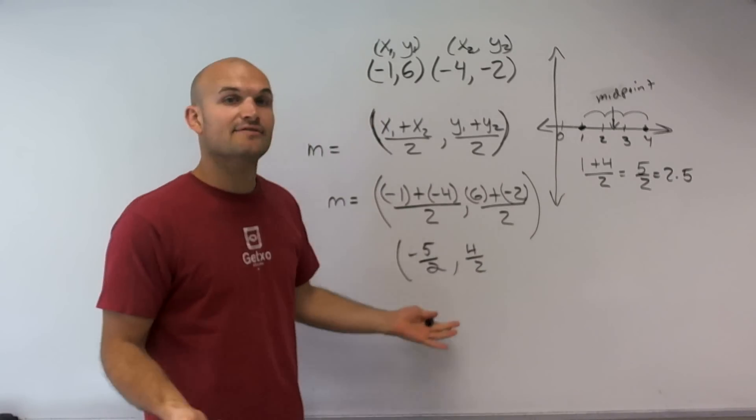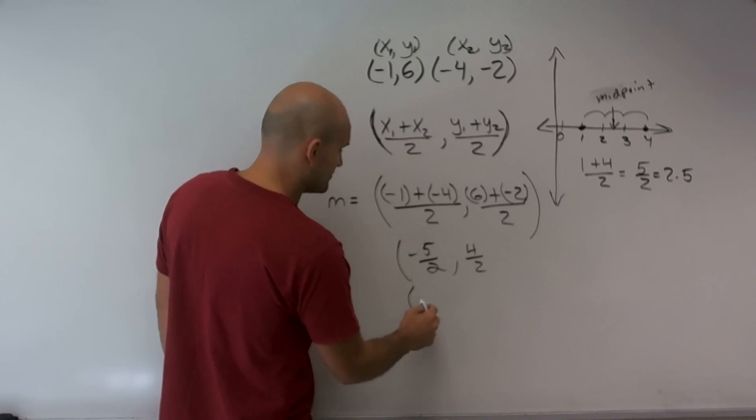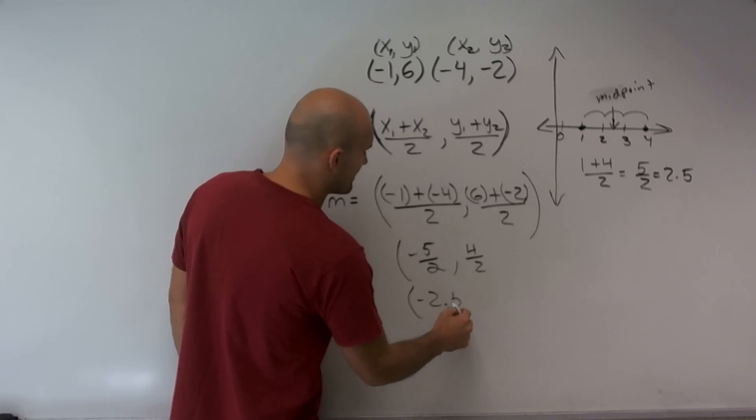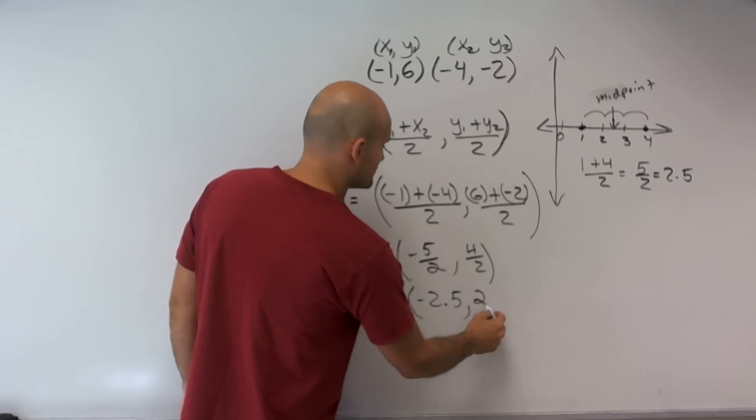And we can just leave it in your fraction. Obviously, this can be reduced. But what we'll do is we can write it as decimals, or we can leave this as a fraction. But as a decimal, this is negative 2.5. And, of course, 4 divided by 2 reduces to 2.